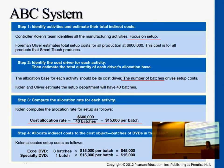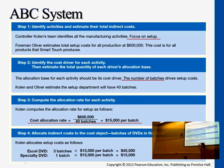Determine the activity, determine the driver, and most likely the problem will give you the dollar amount of the cost and the estimated batches or estimated machine hours. You need to determine the rate for these activities and multiply by how many batches actually occurred or how many hours were actually used for each application. It's very similar to what we covered in Chapter 17 — just with multiple activities.